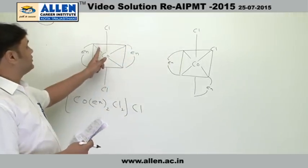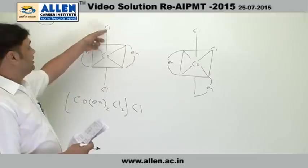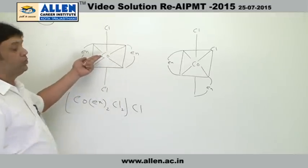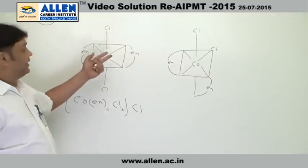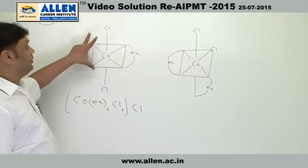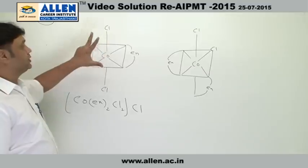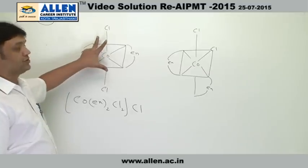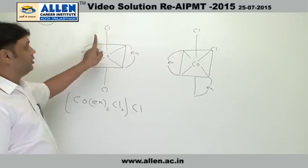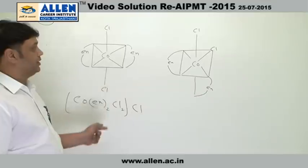In the trans arrangement, as you can see, there is a plane of symmetry which can divide the molecule into two identical halves, and that is why this molecule will be optically inactive and no further isomerism is possible with this compound. So the trans will be only one isomer of its type.